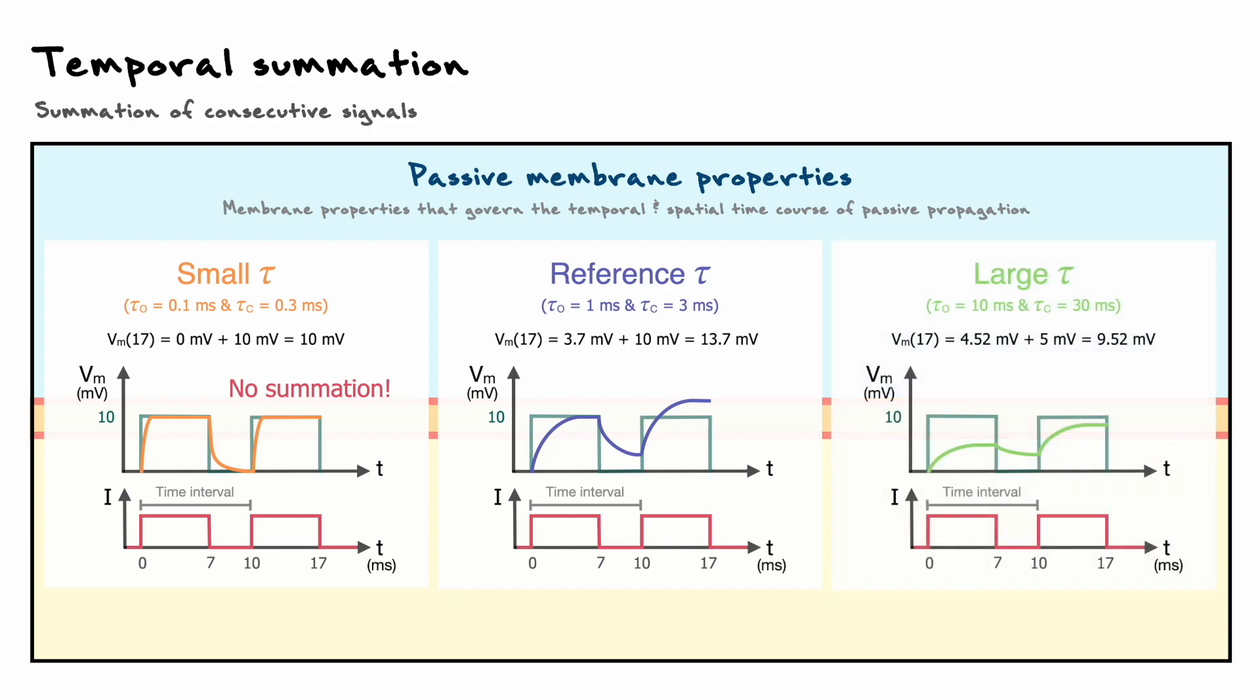For that reason, there is a certain trade-off between low and large time constants. If they are too small, then the potentials will rise quickly to the steady state, but it also means that the potentials will decay quickly and prevent summation. On the other hand, if the time constant is too large, it takes too much time for the post-synaptic potential to reach the steady state, that it only reaches a certain fraction of it, but at least the slow decay increases the likelihood for consecutive signals to summate.